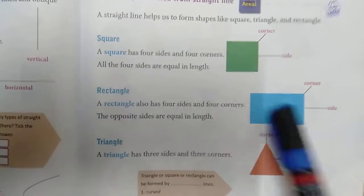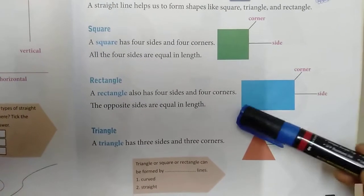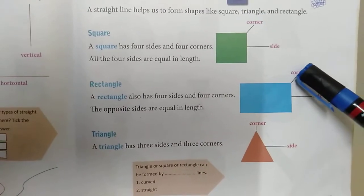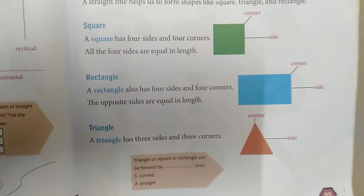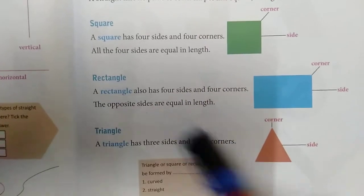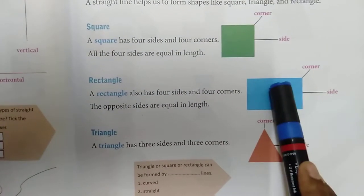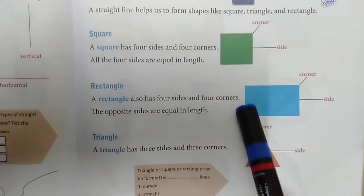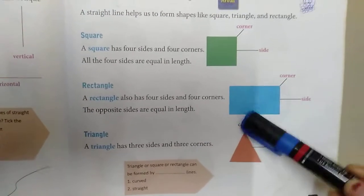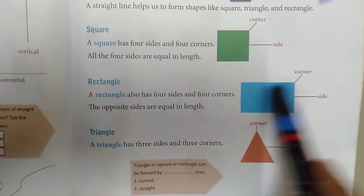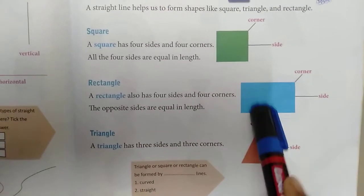Then rectangle. This is a rectangle shape. A rectangle also has four corners and four sides. But in a rectangle, opposite sides are equal. In square, all sides are equal. But in rectangle, opposite sides are equal — these two opposite sides are equal.